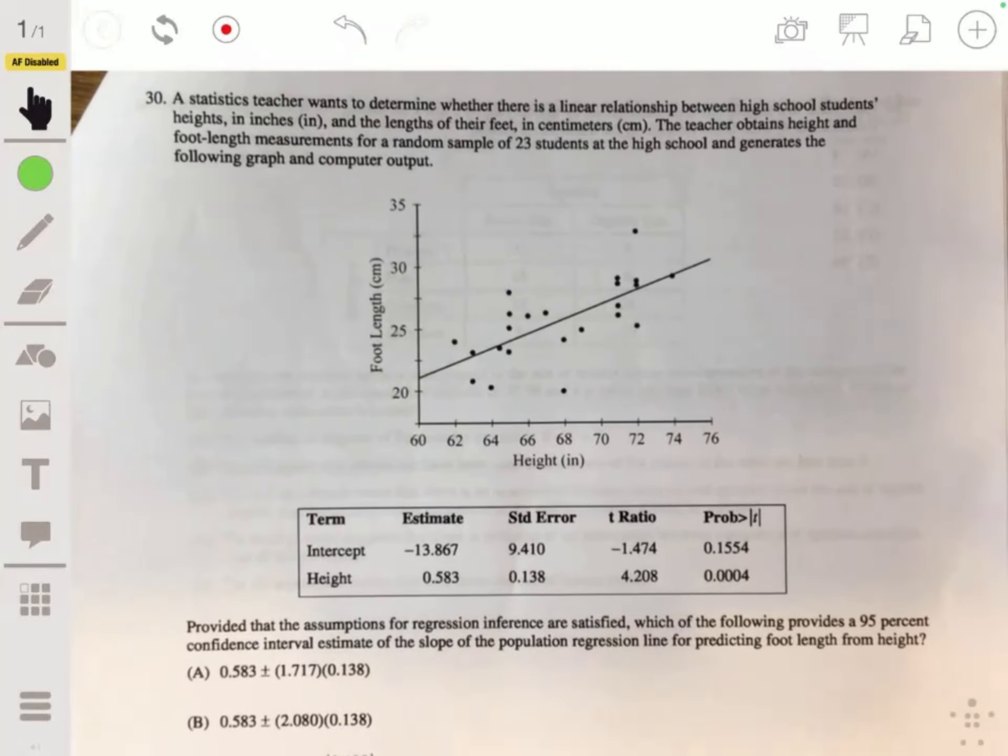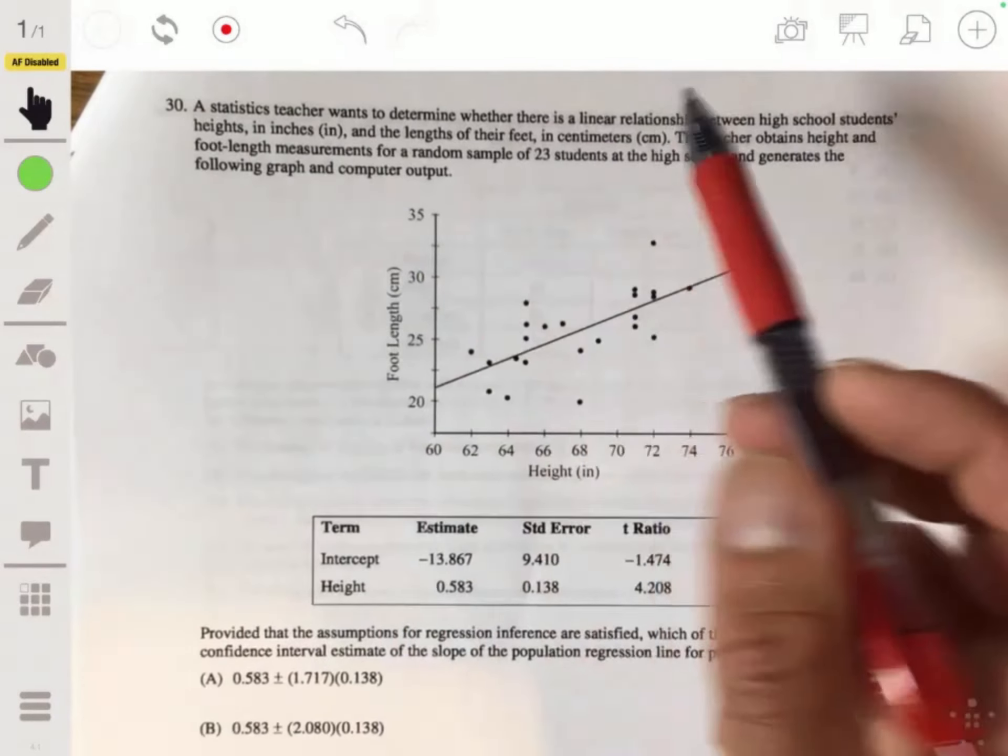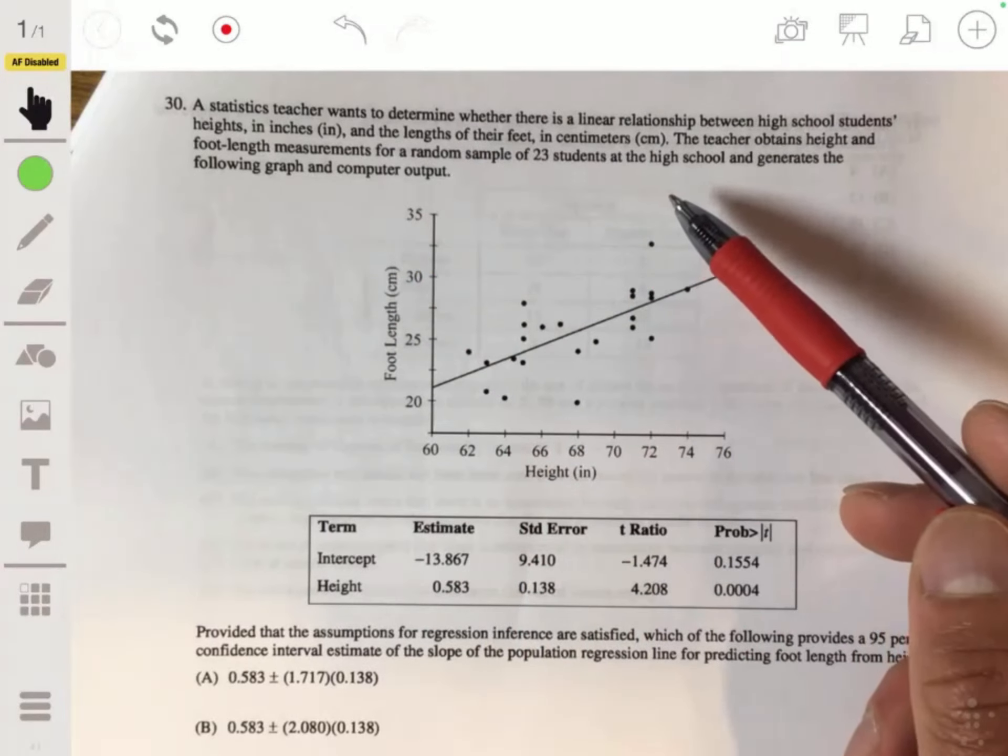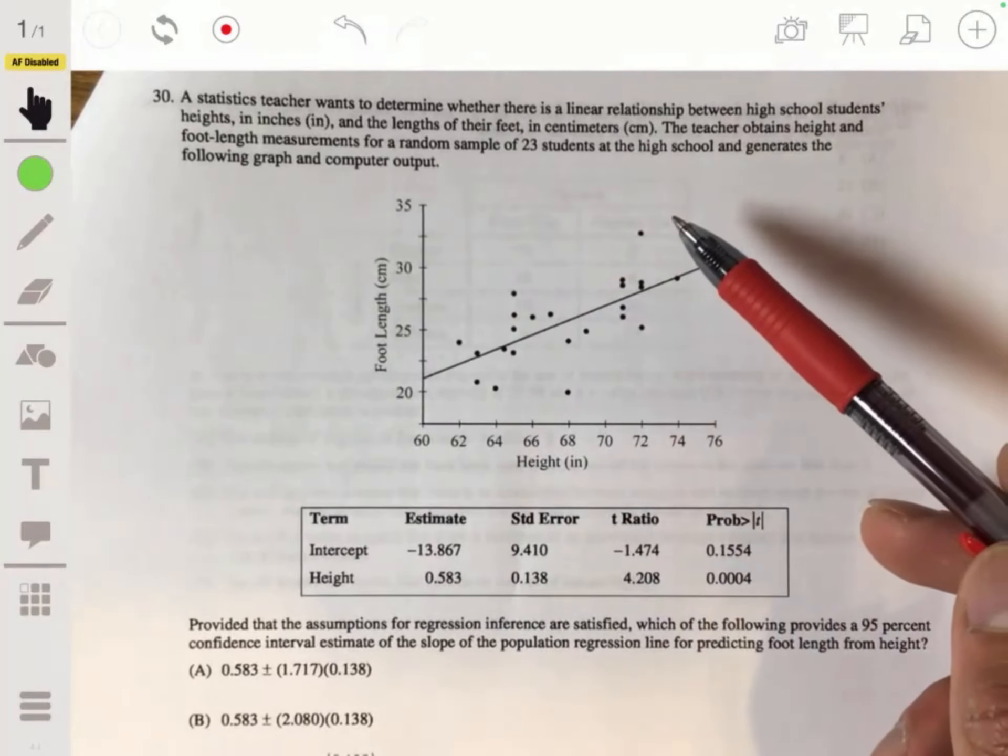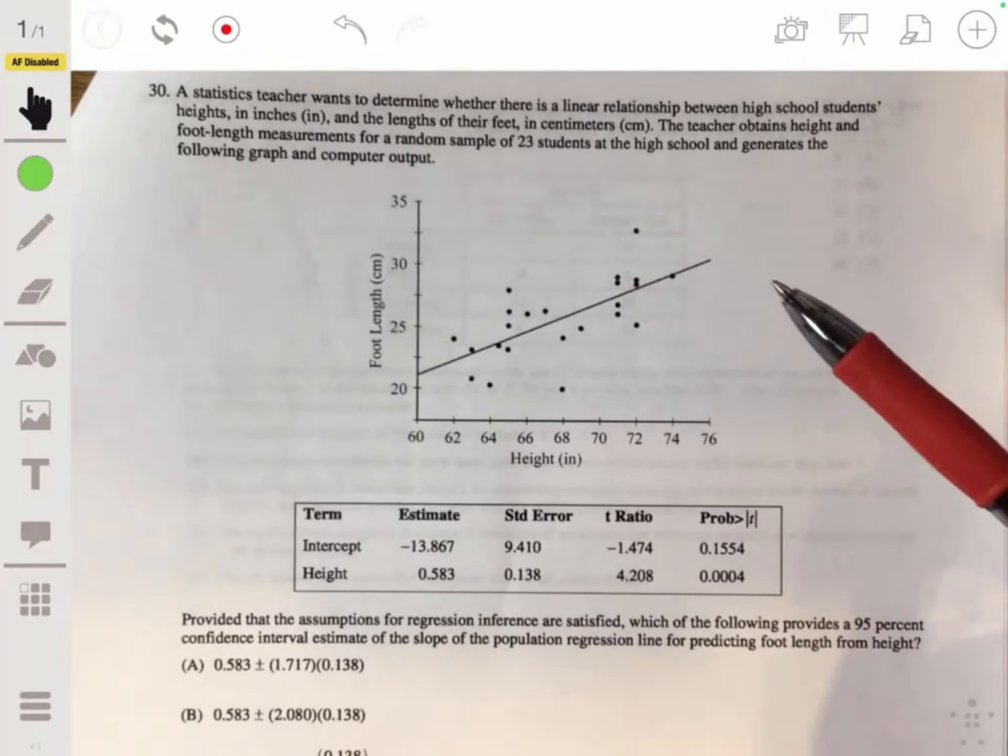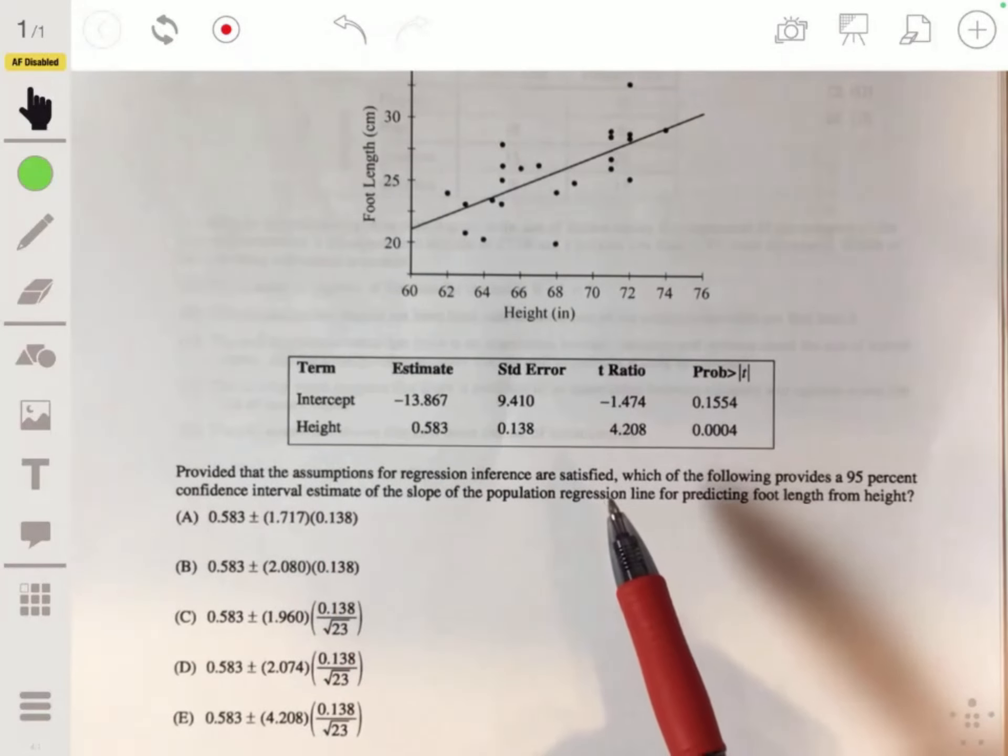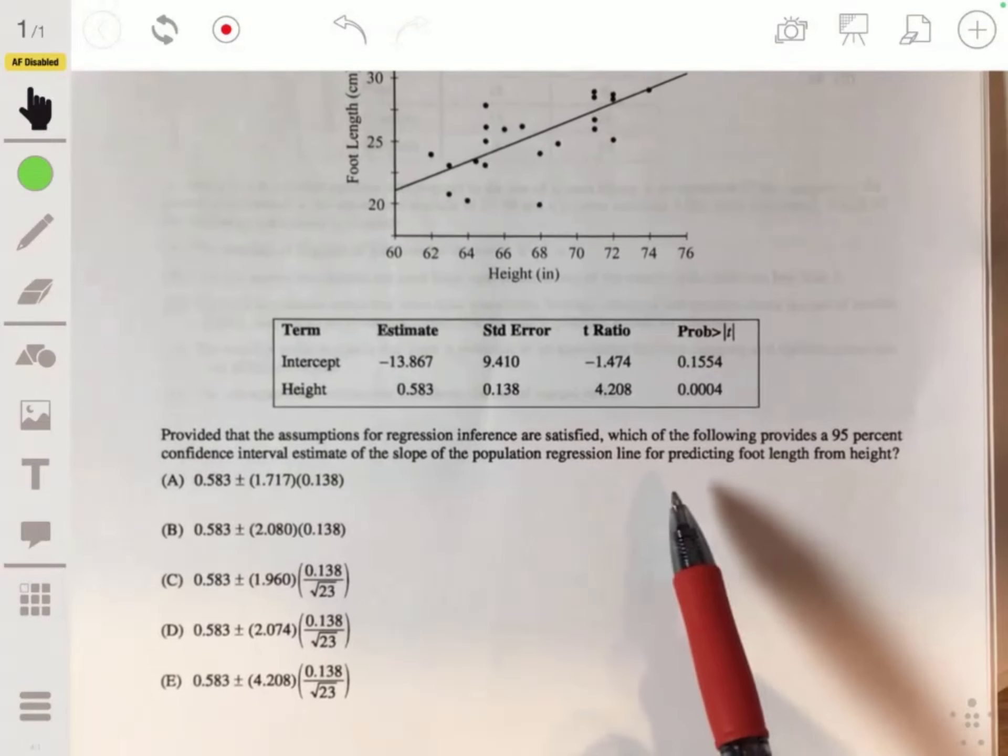I'm going to do this one and then I'm going to take a little break. A statistics teacher wants to determine whether there's a linear relationship between high school students' heights in inches and the lengths of their feet in centimeters. Yeah, of course there is. But anyways, the teacher obtains height and foot length measurements for a random sample of 23 students at the high school and generates the following graph and computer output.